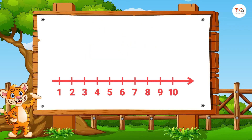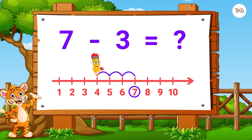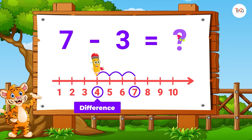To find 7 minus 3, we start from number 7. Then jump 3 numbers to the left. Then see the number where we stop to find the difference. Here we stop at number 4. So, 7 minus 3 equals 4.